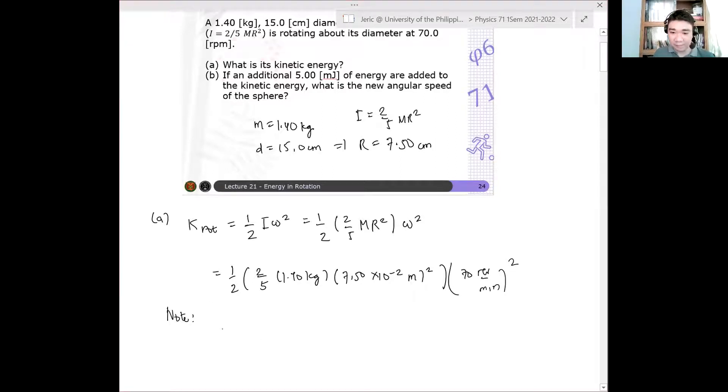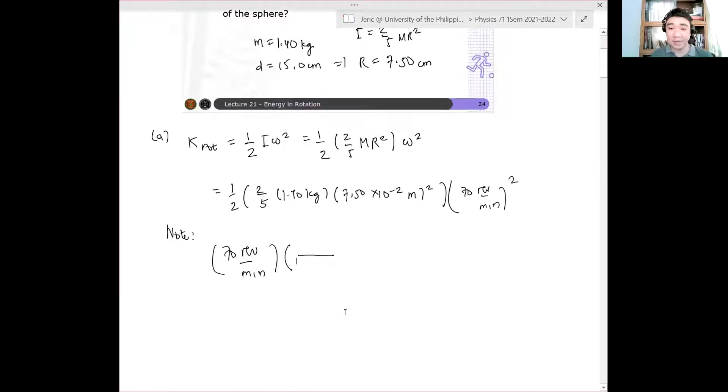We don't want 70 revolutions per minute. Now, please verify this. Note, 70 revolutions per minute—let's convert it. What we want is radians per second, because that's the SI unit. So we have 1 minute equals 60 seconds, times 1 revolution equals 2 pi radians. And please verify that this is 7.33 radians per second.